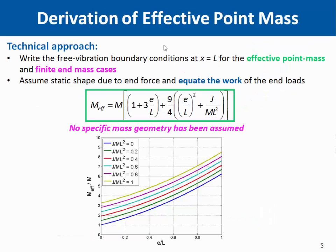Here is the method we use for the derivation of the effective point mass. We write the free vibration boundary condition at the end of the beam for the original finite end mass case and its effective point mass counterpart. We then equate these two works at the end loads and obtain the equation with the effective mass. Note that we restrict our attention to the first bending mode, whose shape is assumed to be dominated by the initial force at the end of the beam.